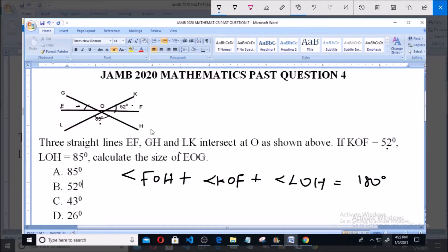180 degrees. Now this is because they are on a straight line. I can see this line LK is a straight line and angle on a straight line is 180. So angle LOH which is 85 degrees plus angle FOH, then plus angle KOH...